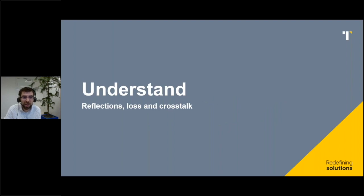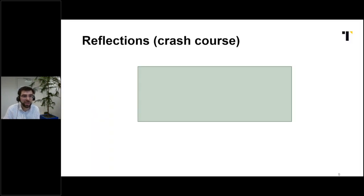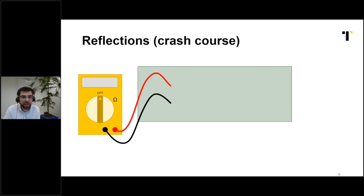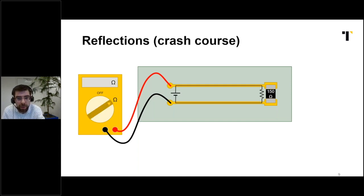Reflections, loss, and crosstalk are three major physical phenomena that are at the root of signal integrity. So let us start with the crash course on reflections. We move from light bulbs and switches to the reality of electronics and PCBs. An ohmmeter connected by traces to a resistor. The ohmmeter applies a voltage, measures the current, and does the math. Simple enough.